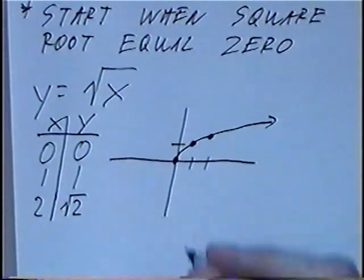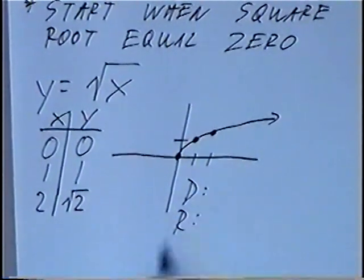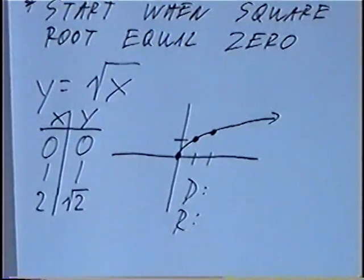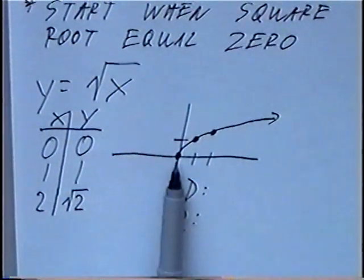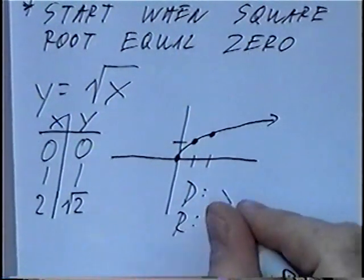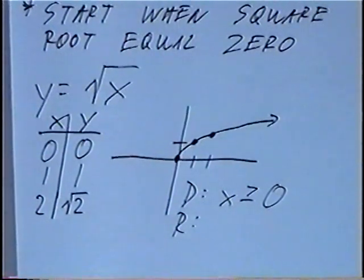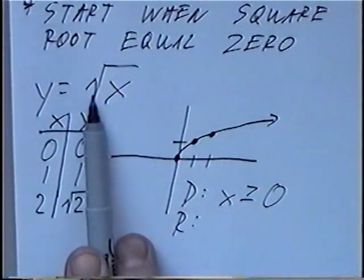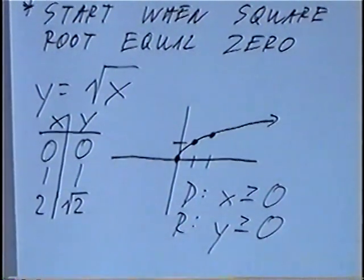The second part is to find the domain and range. The domain is the x values and the range is the y values. Looking at the graph, the smallest x value we can use is zero — anything less than that would give us an imaginary number. So the domain would be x is greater than or equal to zero. The smallest y value on the graph would be zero, since we can never take a square root and get a negative, so the range is also y is greater than or equal to zero.